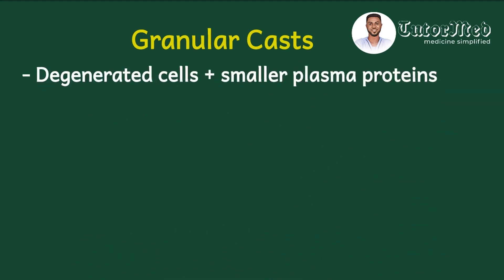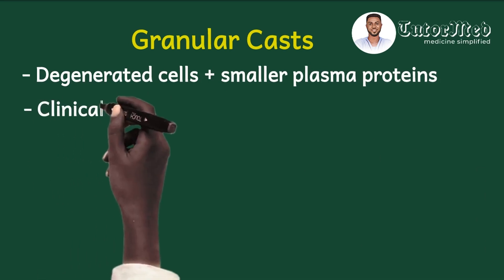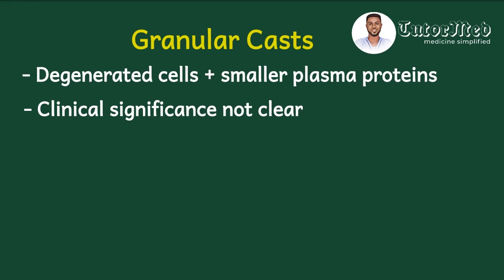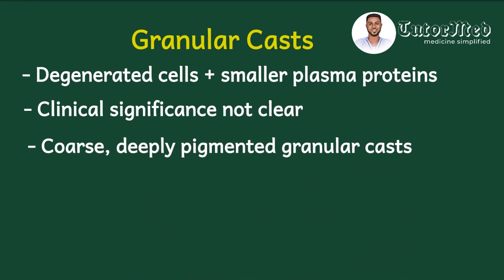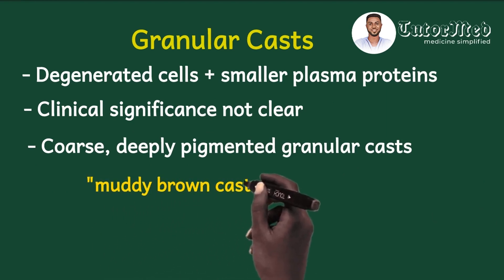The first three casts constitute the cellular casts. Now turning to non-cellular casts, we begin with granular casts. As with every cast, the baseline is Tamm-Horsfall protein, but the added components are degenerated cells with some smaller plasma proteins. The clinical significance of granular casts is not very clear; however, coarse and deeply pigmented granular casts — usually described as muddy brown casts — can be found in acute tubular necrosis. In general, granular casts do not have a clear clinical significance.